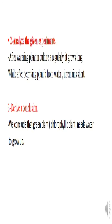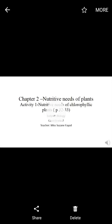The variable factor is the changing element. Now we analyze the experiments: after watering plant in culture A regularly, it grows tall. While after depriving plant B from water, it remains short and does not grow. We conclude that the green plant needs water to grow. Plants deprived of water do not grow, so we conclude that green plants need water in order to grow.